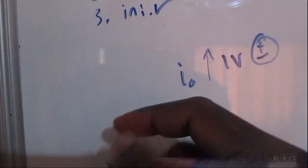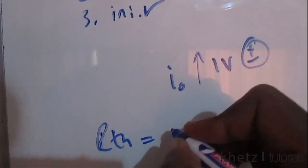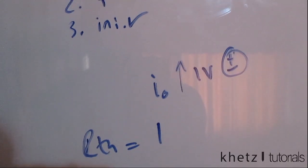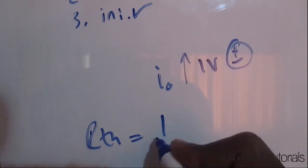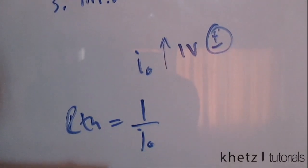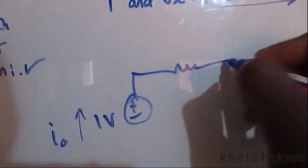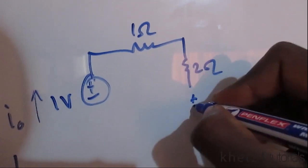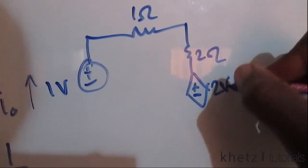Rth equals the test source value of one volt divided by io, which we are going to find. This is our new circuit after introducing the test source, and we are interested in finding Rth at this terminal.